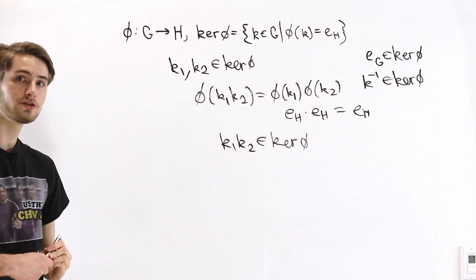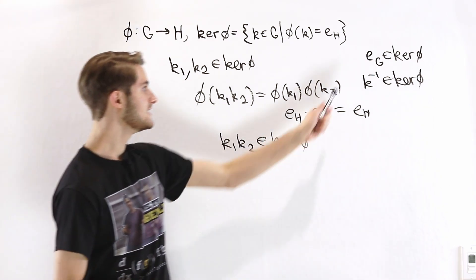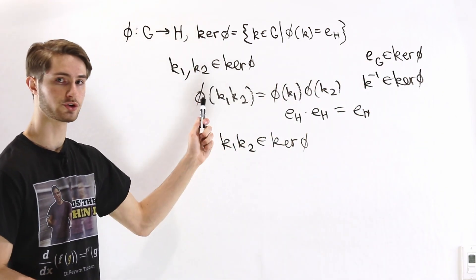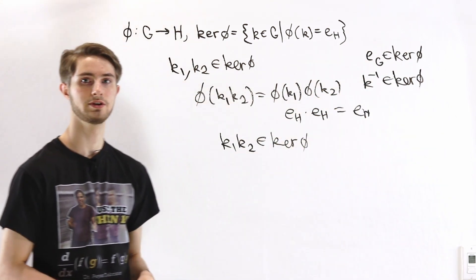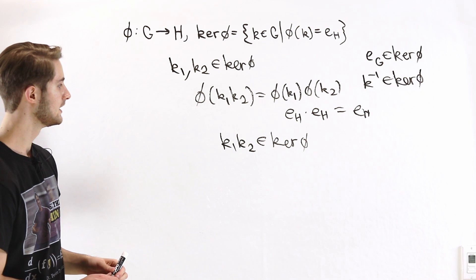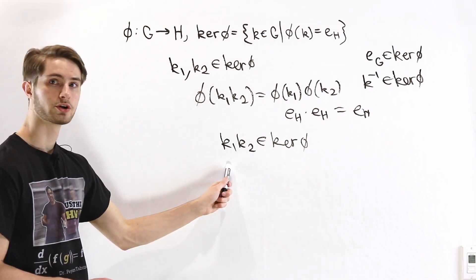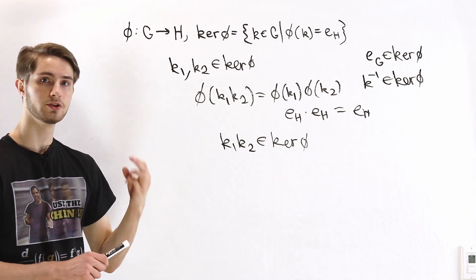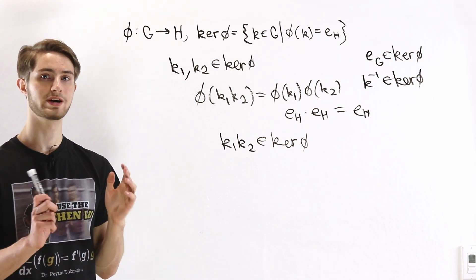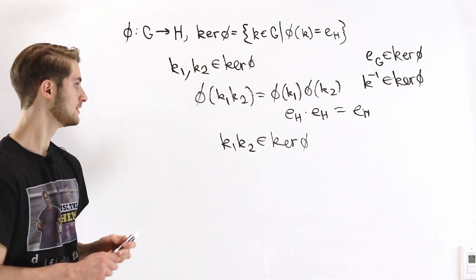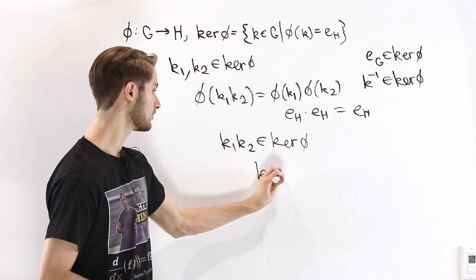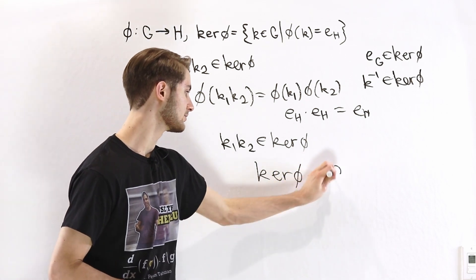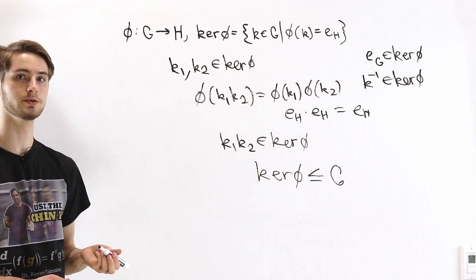We have three conditions: the identity is in the kernel; for every element in the kernel its inverse is also in the kernel; and the kernel is closed under multiplication. Those are exactly the three conditions needed for a subgroup, so we conclude that the kernel of a homomorphism is always a subgroup of the original group.